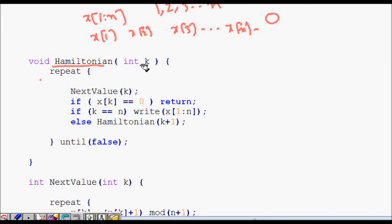Every time we call Hamiltonian with int k, and then we find which should be our kth node in the Hamiltonian cycle. This next value k assigns the kth node for the Hamiltonian cycle. If it is not able to assign, if whatever we have assigned till now, x1, x2 till xk minus 1, if nothing is possible,